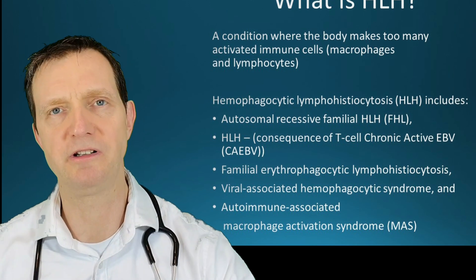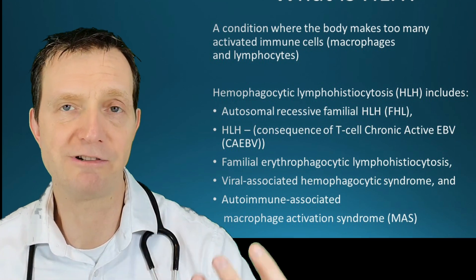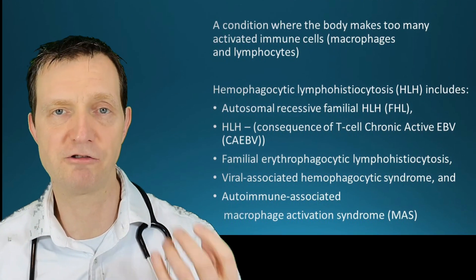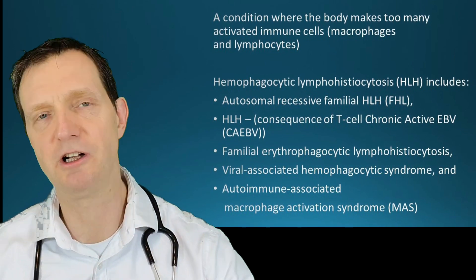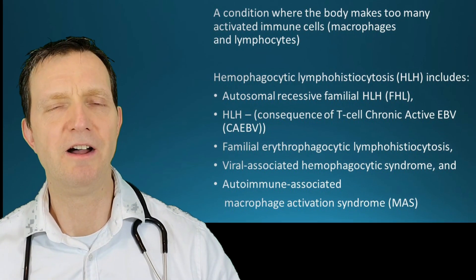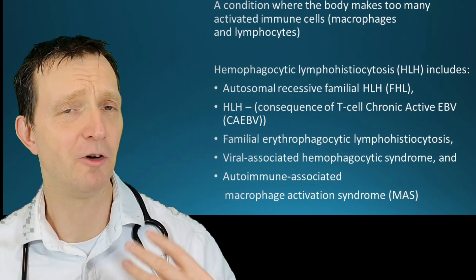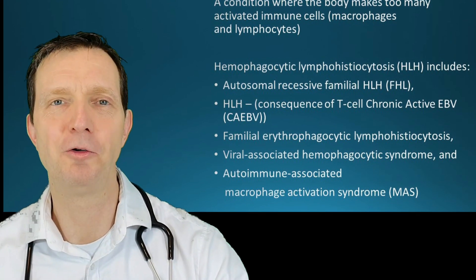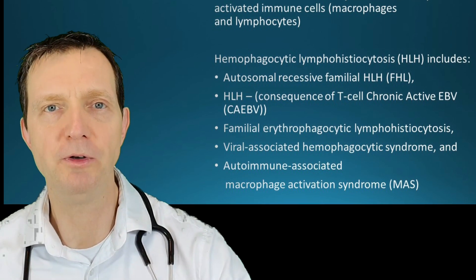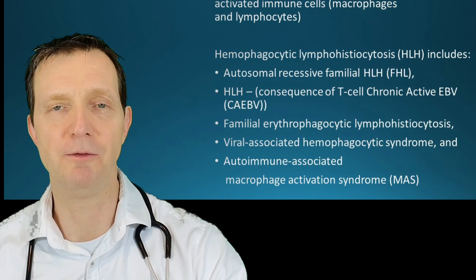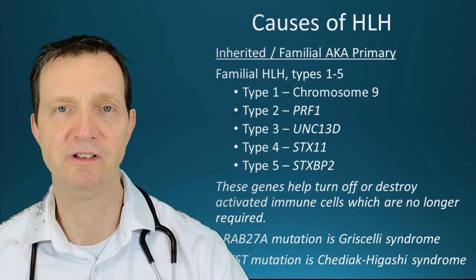It can also be a consequence of overactive T cells, usually made overactive by EBV, so you can have a chronic active EBV type syndrome or disease. You can also have familial erythrophagocytic lymphohistiocytosis, viral-associated hemophagocytic syndrome, and autoimmune-associated macrophage activation syndrome, known as MAS. So it's a collection of diseases as opposed to just one single disease.